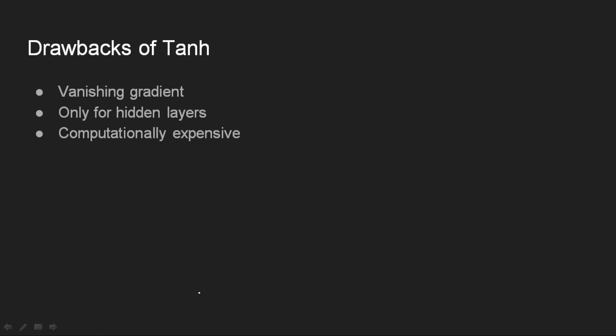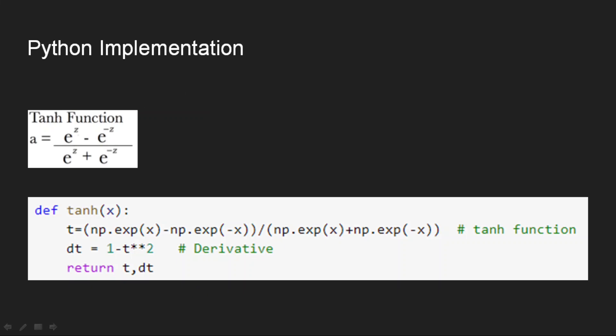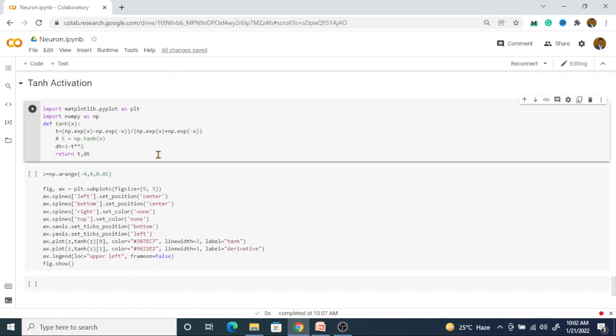Now let us look at the Python implementation. We know that tanh function is of this form. This is numerator and this is denominator. We are just using numpy exponential functions with positive and negative signs in the numerator and denominator. And we know that the derivative is 1 minus tanh squared. We have calculated the tanh here. We are taking it to calculate the derivative here. Let us look at the implementation in Colab. I am importing matplotlib and numpy. Matplotlib is for plotting the graph, and numpy I am using for calculating the exponentials. You can use the tanh function available in numpy as well. The derivative is 1 minus tanh squared.